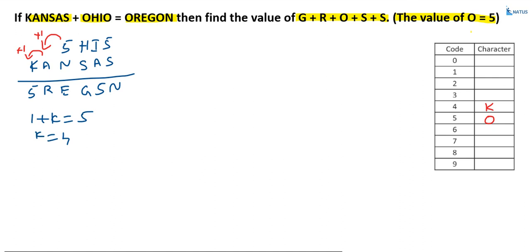Coming to the fifth column from the right-hand side: one carry over from the previous place, and this must equal 10 or not more than 10. So this equals 10, meaning A must equal 9. Because one plus 9 equals 10, and R must be zero.